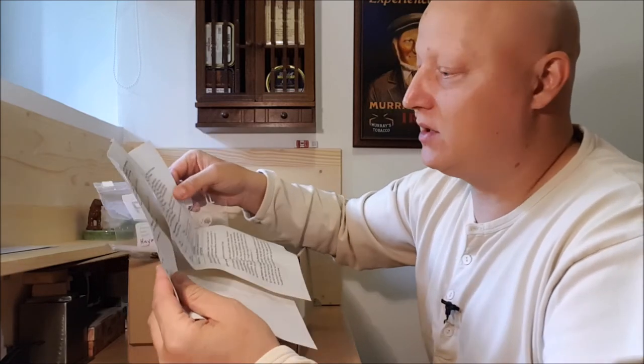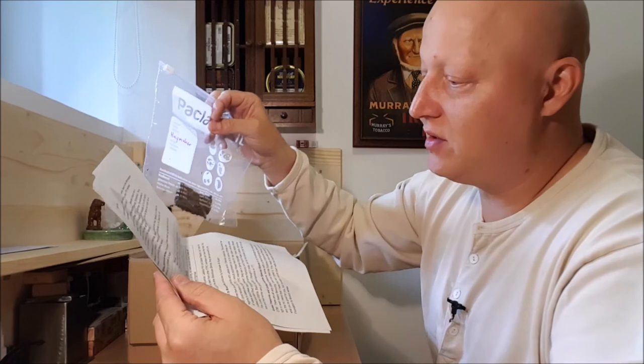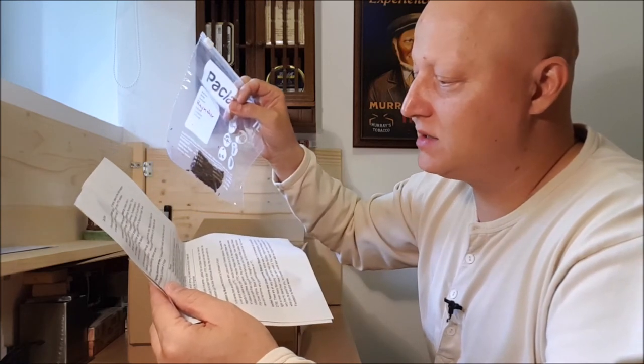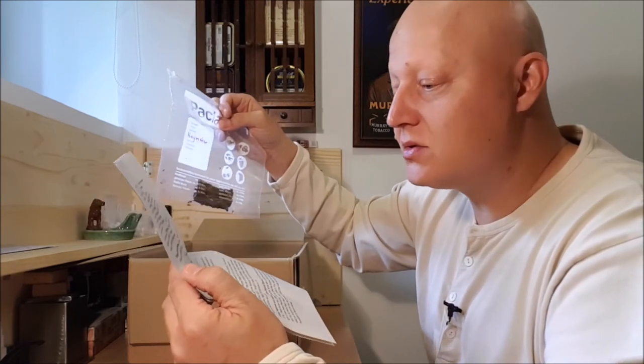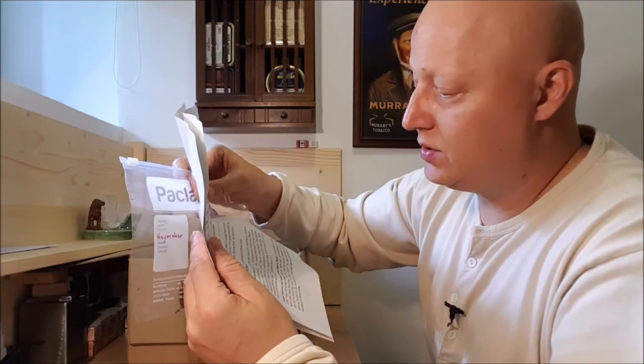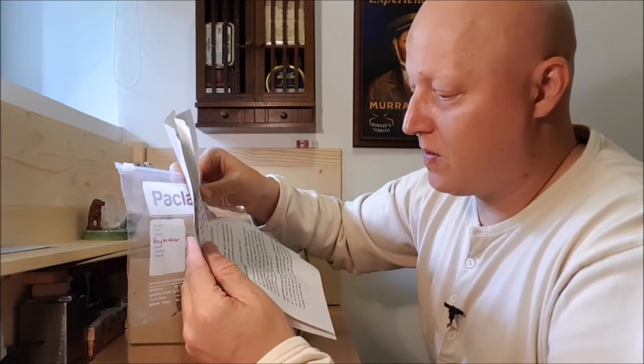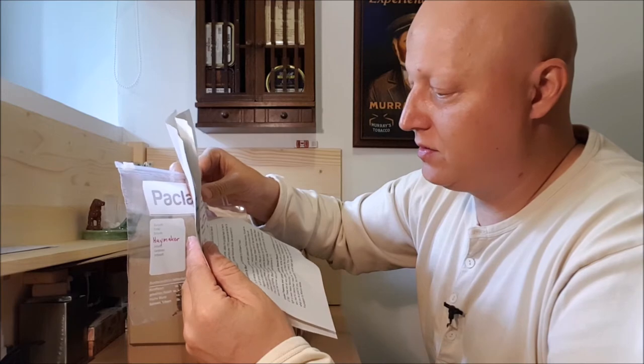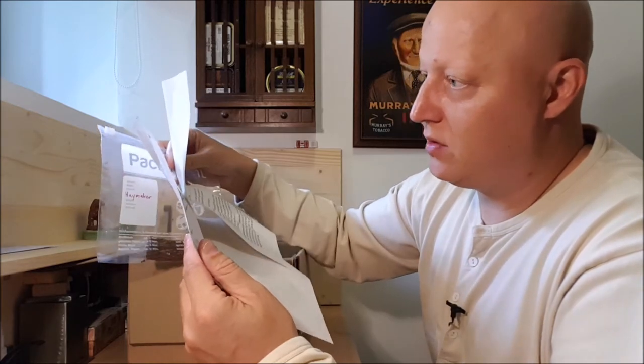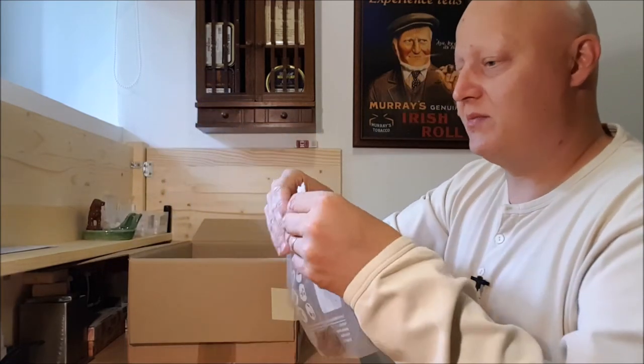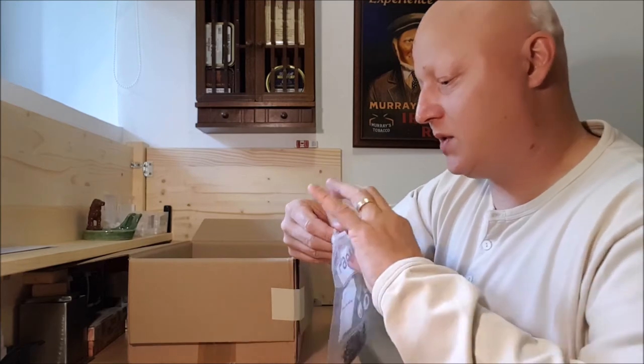So these that I'm showing you are blended by HU Tobaccos and are produced by Kohlhase and Kopp. This one Director's Cut is Virginia Perique curly cut mixed with Burley grades. The Haymaker, I don't have the information here but I will look up on the internet. So let me sniff this quickly.